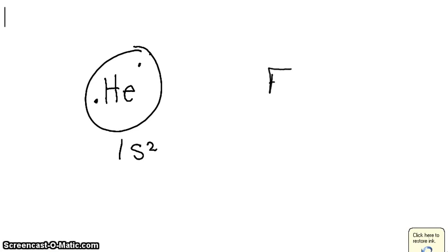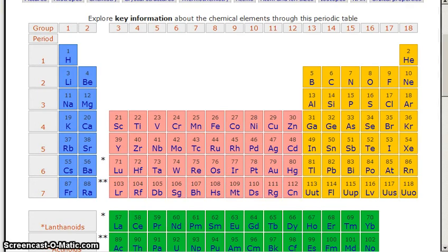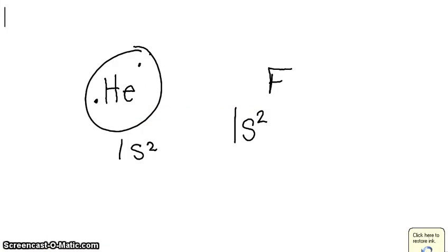So fluorine has 1s². So it has two electrons in the first s shell. And then we come down here, and we see that the next shell is 2s². So we go back and write that here: 2s². It has two electrons in that shell.